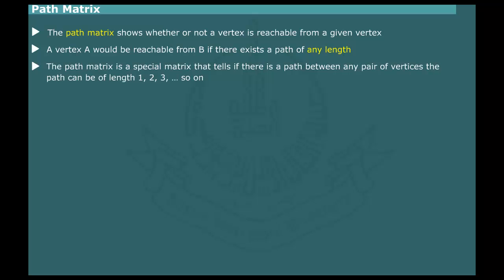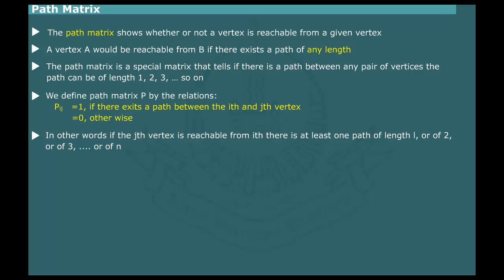A path matrix is a special matrix that tells if there is a path between a pair of vertices of a graph. We can define a path matrix P by the relations: Pij equal 1 if there exists a path between the i-th and j-th vertex, equal 0 otherwise.